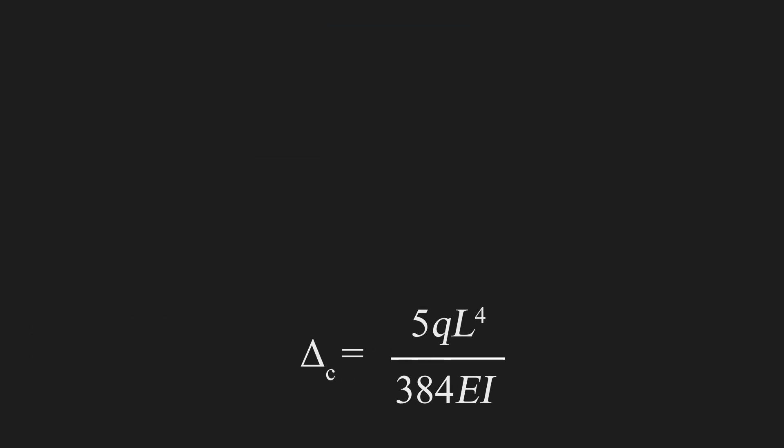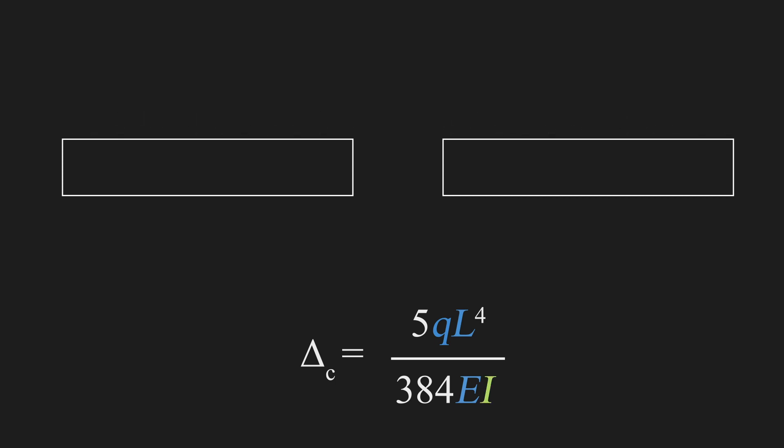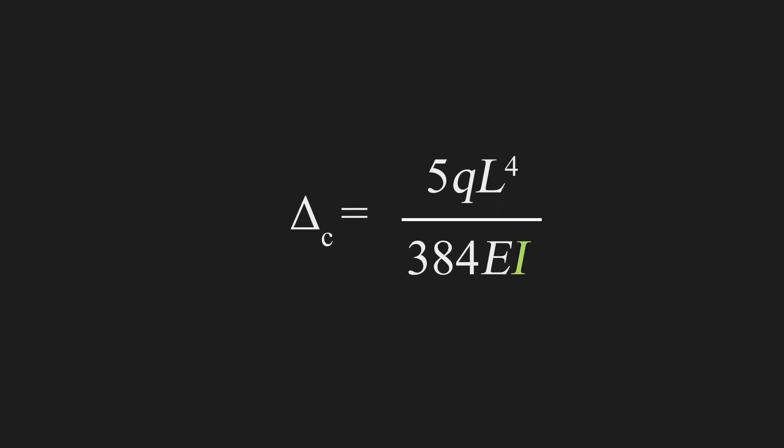Now, if we look back on our equation, if we have two beams that are the same length, the same material, and have the same force applied on them, the only variable left is our second moment of inertia. And since it's on the bottom of the equation, if we increase our second moment of inertia, then the beam deflection will decrease, therefore making the beam stronger.